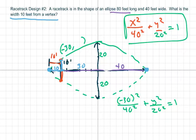So you could solve for y. So I'm going to move it over on this side now. You get 1. You get y squared over 400 equals 1 minus 900 over 1600.